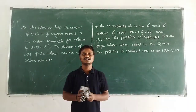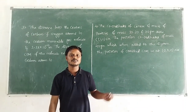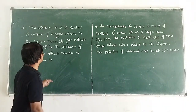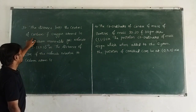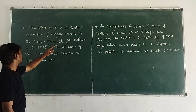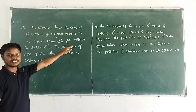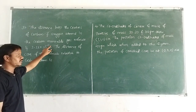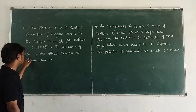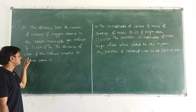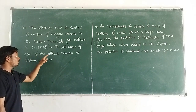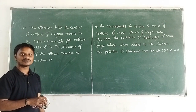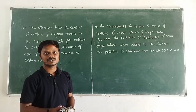Hello dear students. We will solve some questions related to position of center of mass. What is the third question here? The distance between the centers of the carbon and oxygen atoms in the carbon monoxide gas molecule is 1.13 × 10⁻¹⁰ meter. The distance of the center of mass of the molecule relative to the carbon atom. We need to find the position of the center of mass.